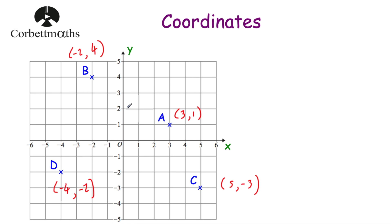So we've written down the coordinates of point A (3, 1), point B (-2, 4), point C (5, -3), and point D (-4, -2). Now let's look at how we would actually plot points if we were given the coordinates.